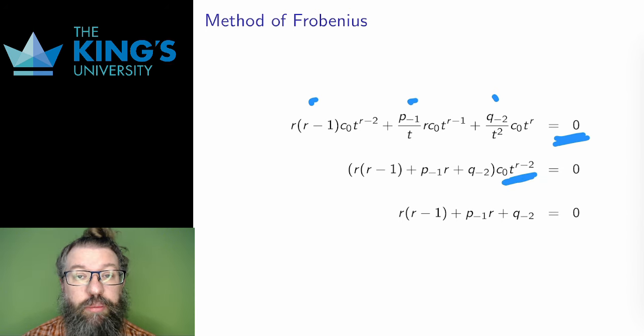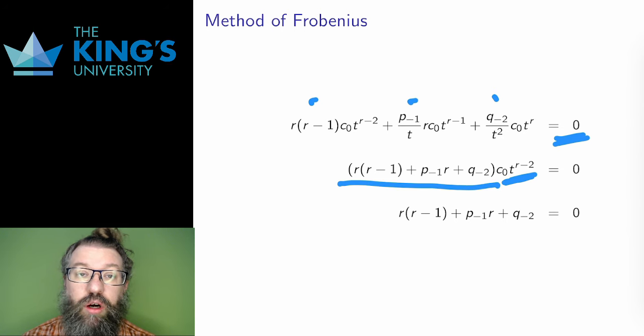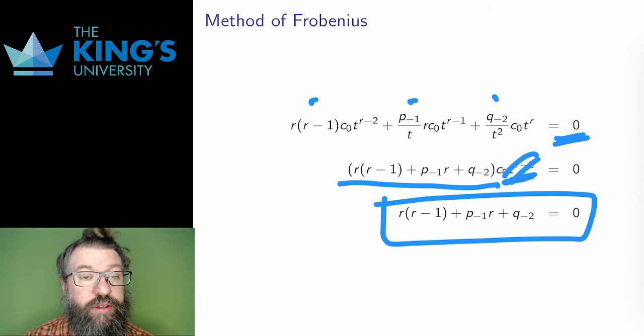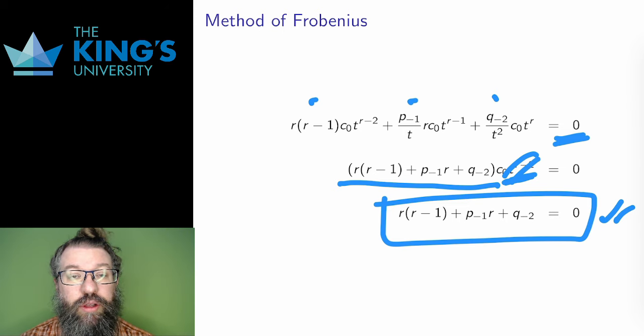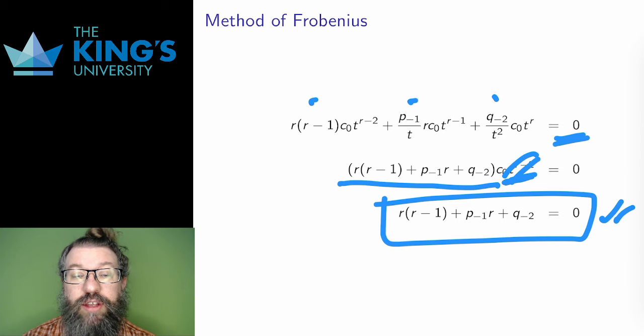I can factor out C0, and I can factor out t to the r minus 2. C0 cannot be 0 in this method, since that would disrupt the choice of r at the start. Therefore, in order to satisfy the differential equation, I get this equation. What is this? This is a quadratic in r. Again, a complicated DE works its way down to a quadratic equation that captures the most important information. This quadratic determines r, and once r is determined, then this essentially looks like a series solution that we've done so far, and I will process it the same way, find the recurrence relation, calculate the coefficients, and so on.